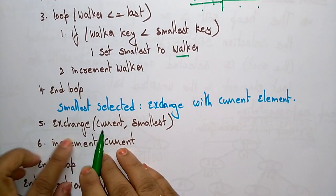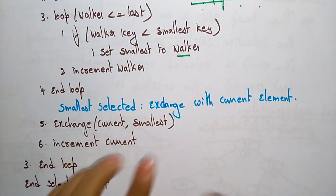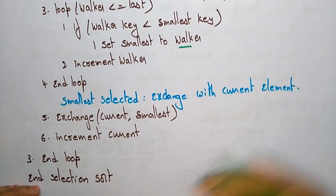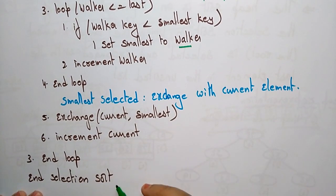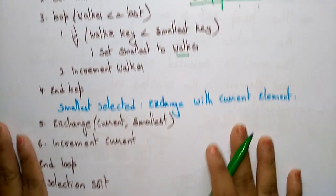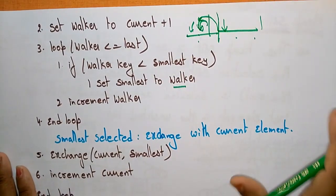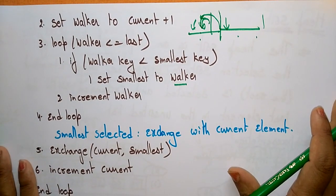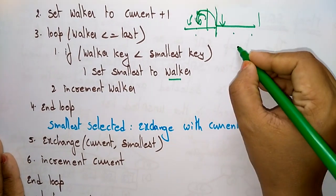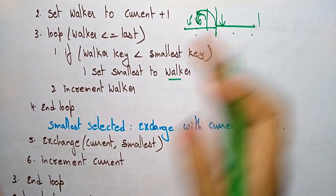The loop continues: smallest selected, exchange with the current element — exchange the current and the smallest — then increment the current value and loop. This completes the algorithm for selection sort. Based on this algorithm we now sort elements with a simple example.